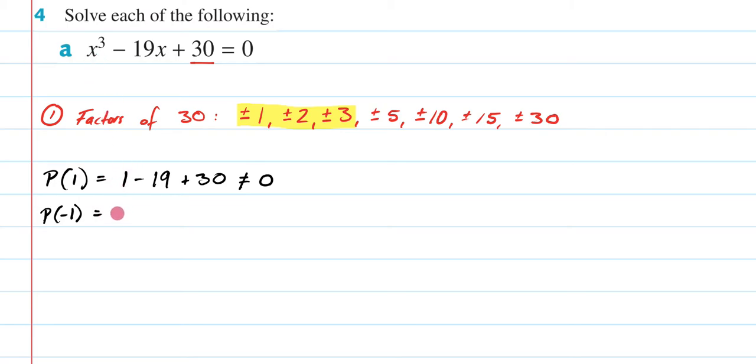So let's move on to negative one. In which case, I'm going to get negative one there, then we're going to get plus 19, then we're going to get plus 30. Quite clearly, again, there's no way that's going to give me zero.